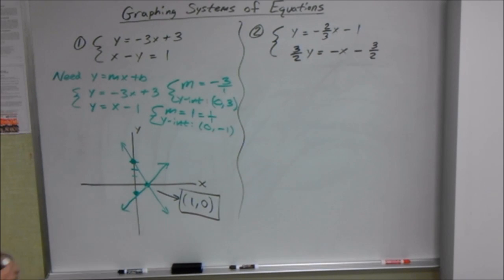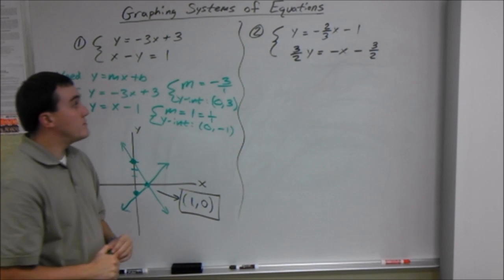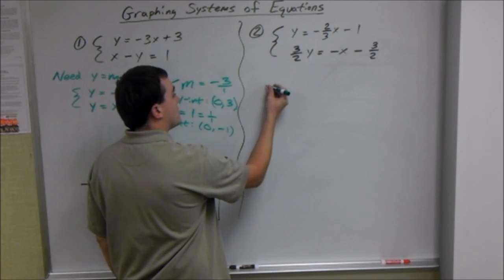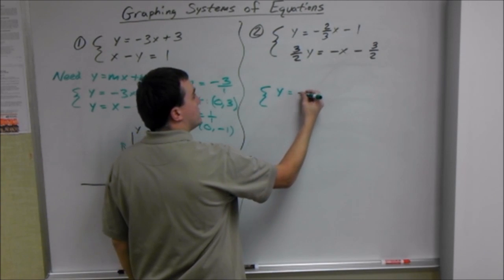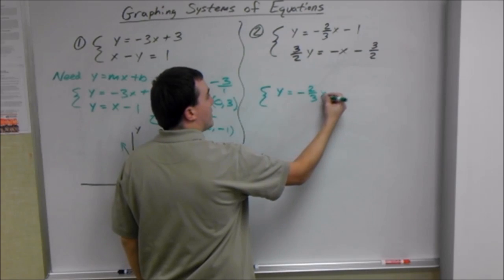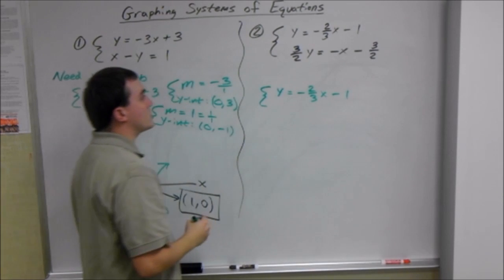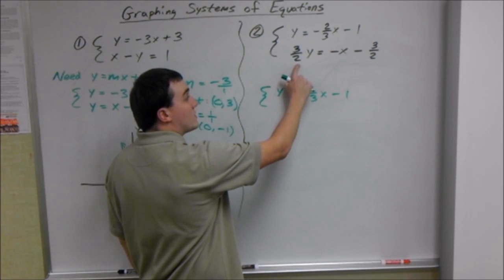Second one, similar to the first, we need y equals mx plus b first. This one's already done for us. So we can rewrite the system. Y equals negative 2 thirds x minus 1. That's our first equation. And we need to solve for y here.